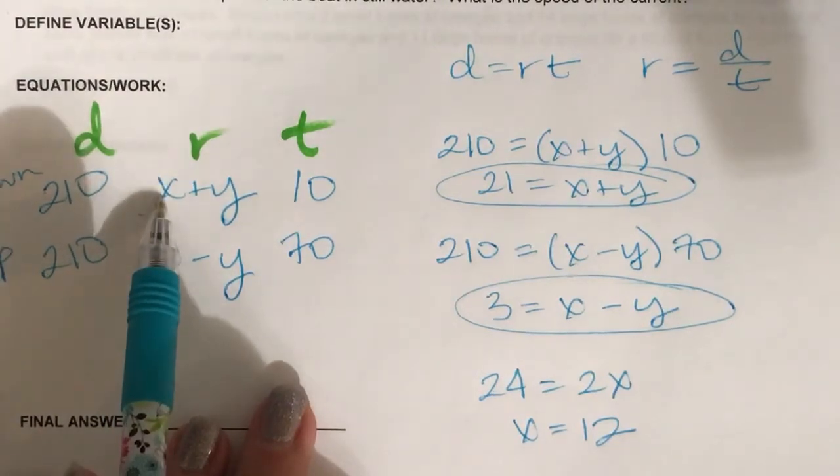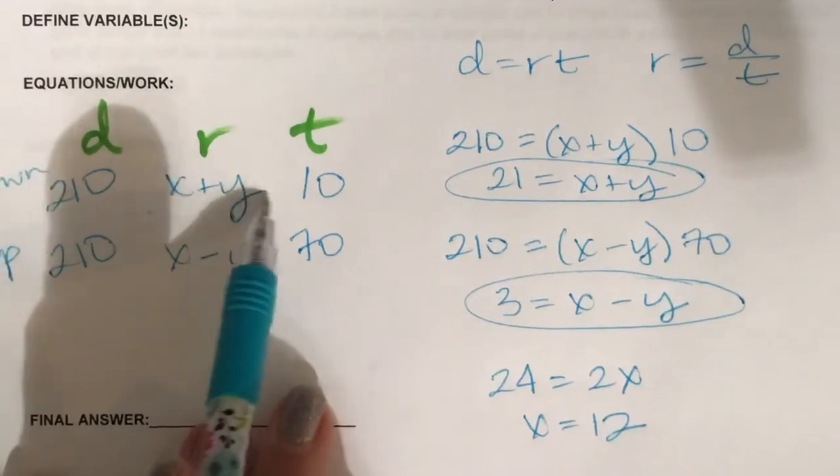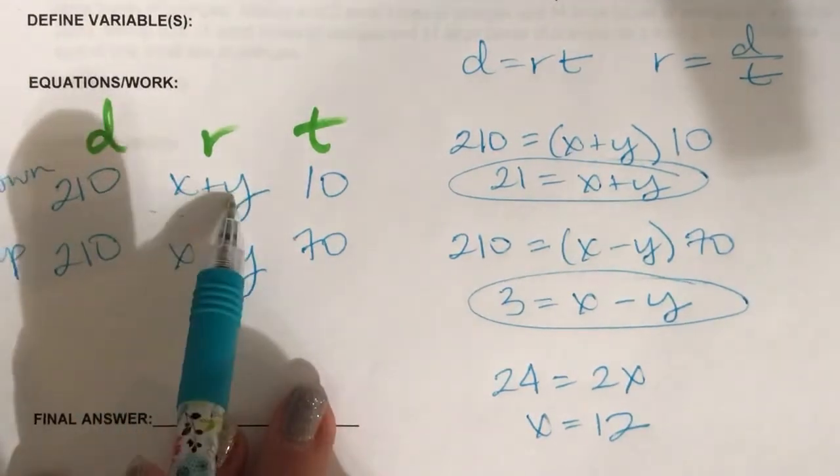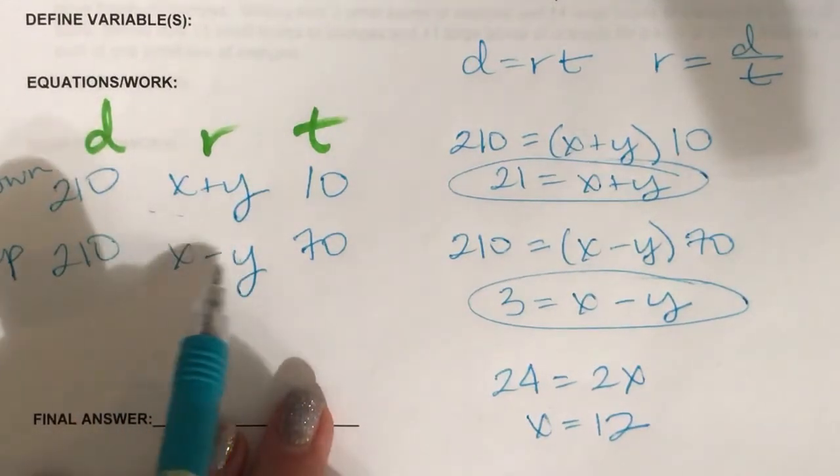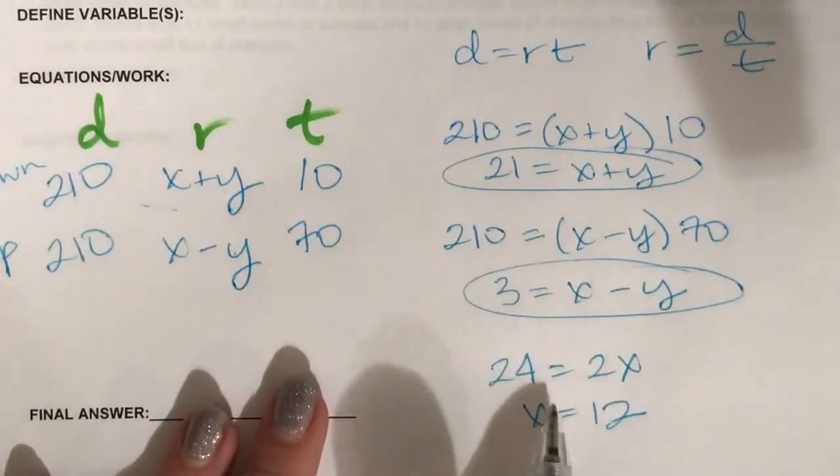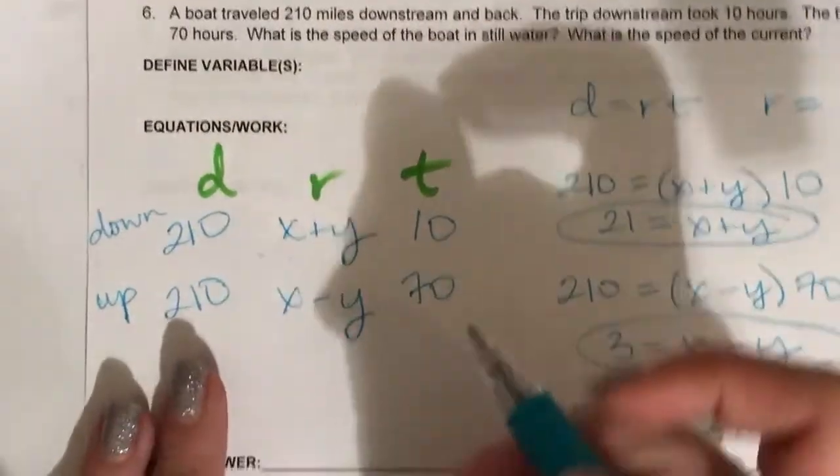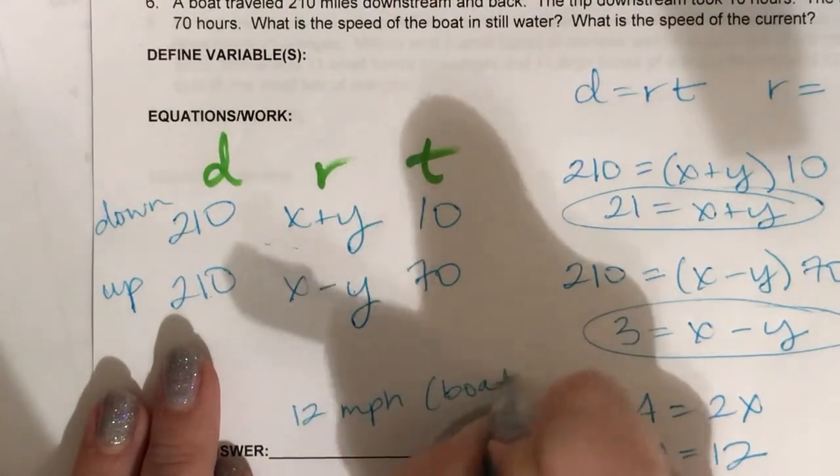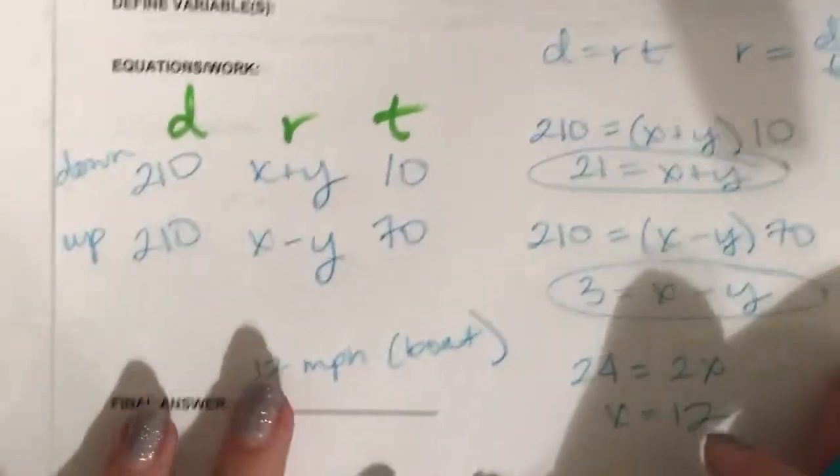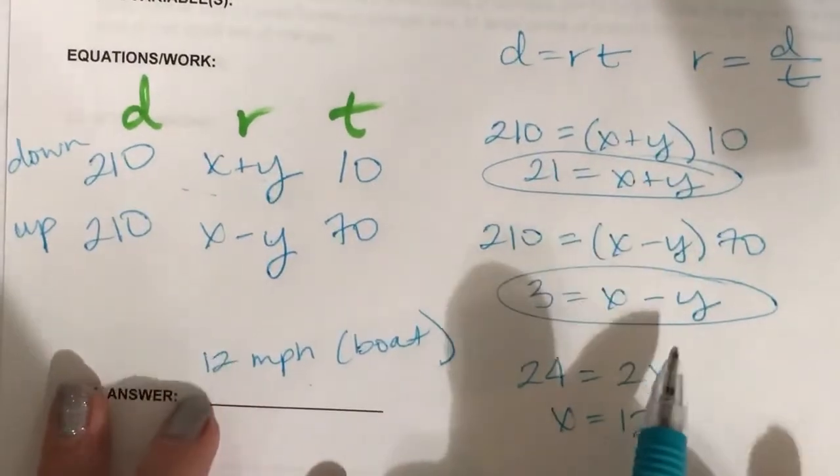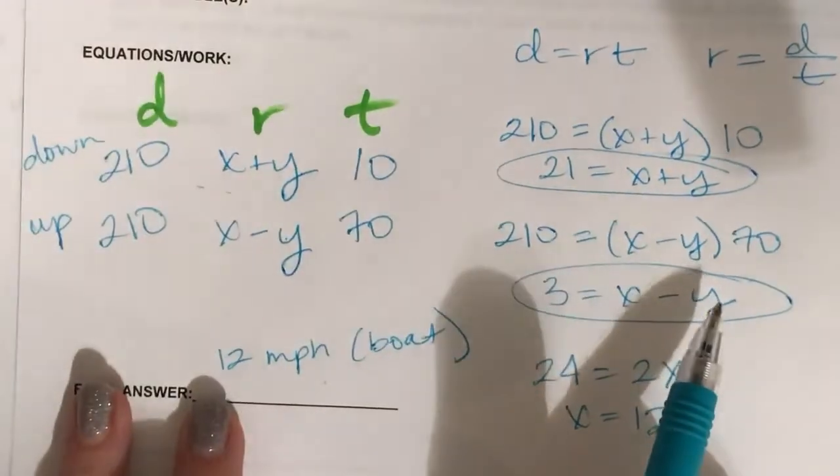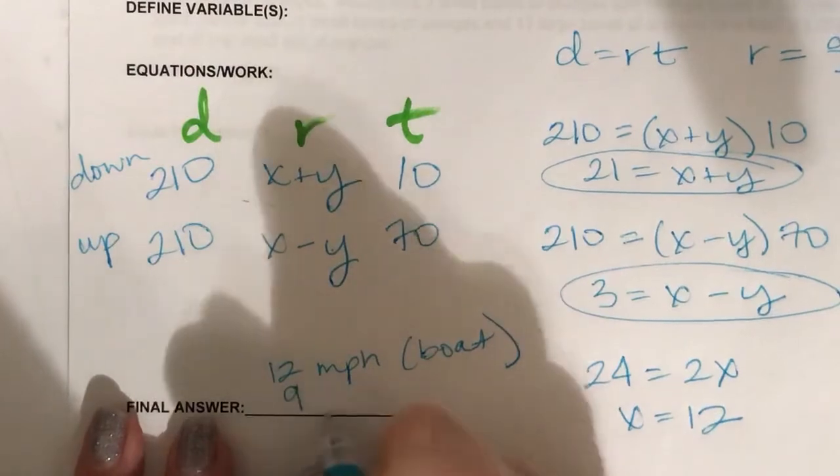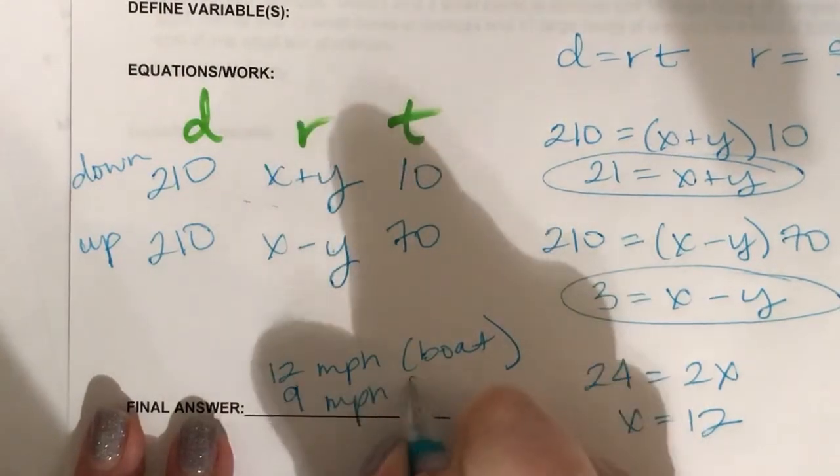Y is the speed of the current that's helping as the boat goes downstream and slowing down as the boat goes upstream. So we just found the speed of the boat in still water is 20 miles per hour. Plug back in to either equation and you would see that the speed of the current must be 9 miles per hour.